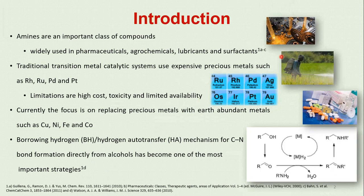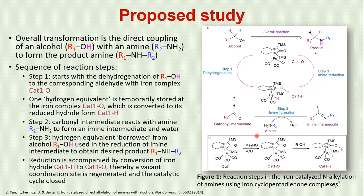Hence, the focus has now shifted to developing earth-abundant transition metals such as copper, nickel, iron, and cobalt as catalysts for the N-alkylation of amines with alcohol. The borrowing hydrogen or hydrogen auto-transfer mechanism shown on the left has become one of the most important strategies for the green and sustainable formation of the carbon-nitrogen bond directly from alcohols. The borrowing hydrogen reaction is an environmentally friendly and atom-efficient reaction.